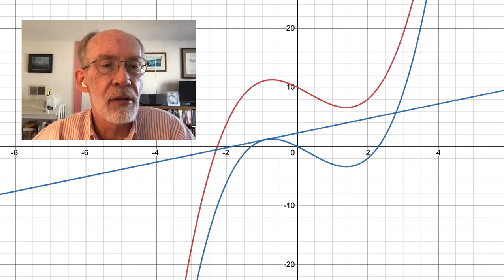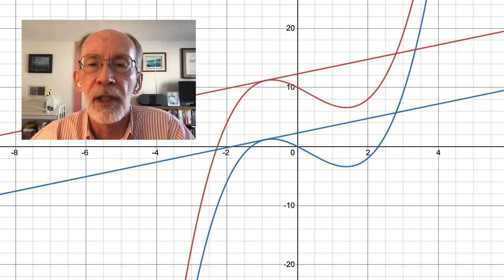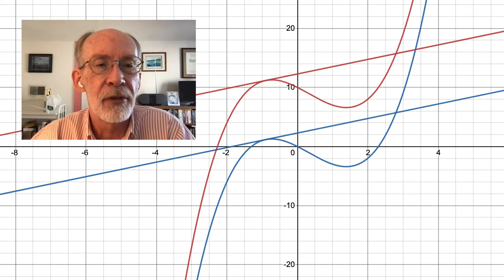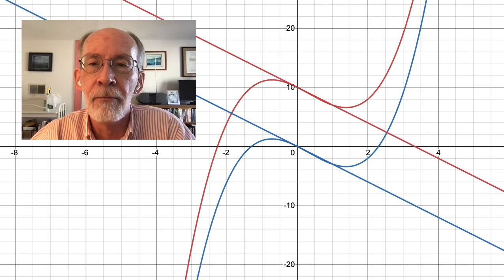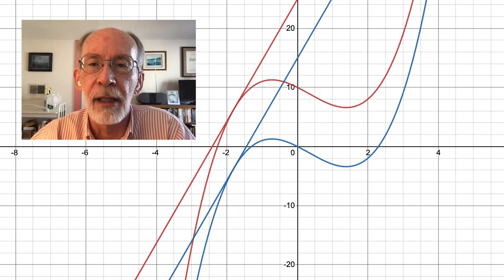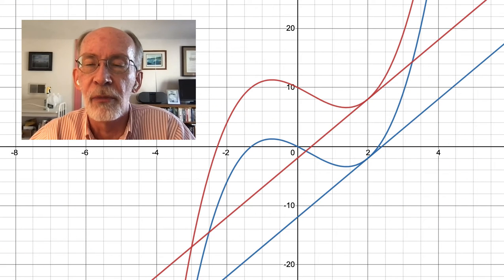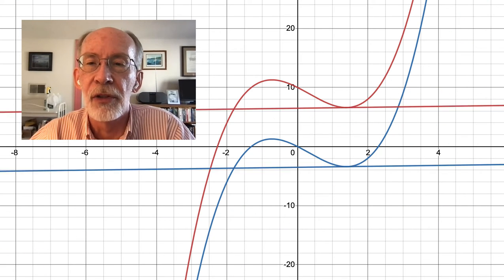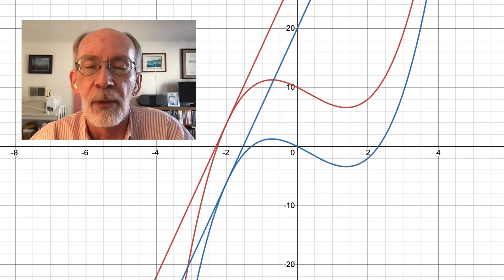And if I turn on tangent lines to these two functions at the same value of x, and if I slide around a little bit, it seems pretty clear visually that the tangent lines are parallel. And the fact that the tangent lines are parallel, of course, means that the derivatives of the two functions are equal at each of these x's, at least the ones that we're seeing here.